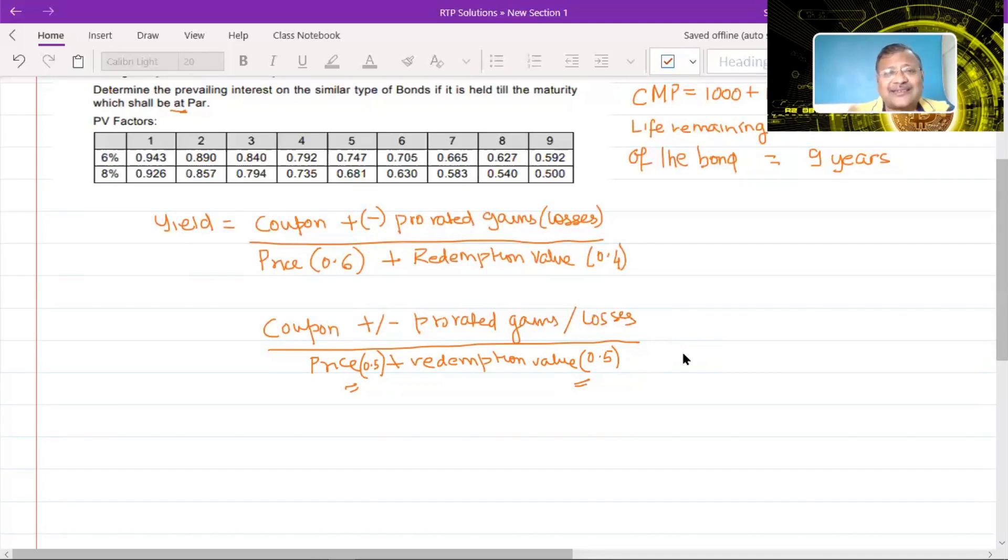Price is what you pay for the bond today and redemption value is what you're going to get for the bond on its maturity. Obviously, you can't assign equal weightage to what you're going to pay today and what you're going to receive at the end of a certain period. The price or value of the bond today will obviously have to be given slightly more weightage because that is as of today. Whatever is happening today will have more weightage than what is going to happen in the future.